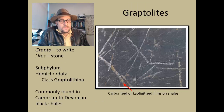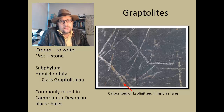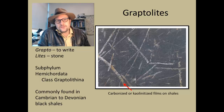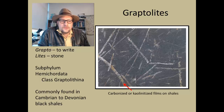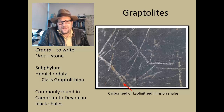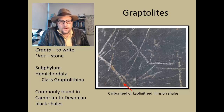Graptolites basically mean 'grapto,' which is Greek for 'to write,' and 'lites,' Greek for 'stone,' so these are 'written stones.' These are very weird fossils that are found in black shales — weird, writing-like features that for many years people pondered. It looked like someone had taken chalk and written on black shale.